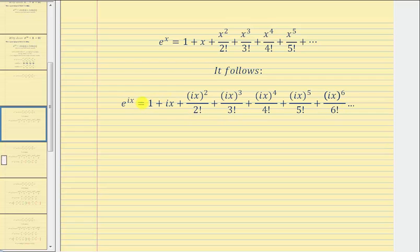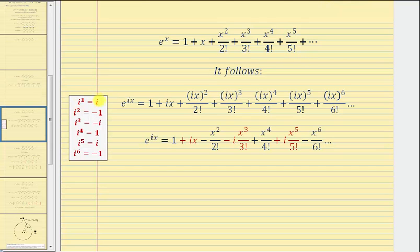And now we'll simplify the terms in our power series. And for a quick review, remember, i to the first is equal to i, i squared is equal to negative one, i to the third is equal to negative i, i to the fourth equals one, and then the values start to repeat.